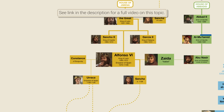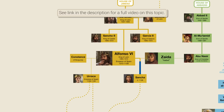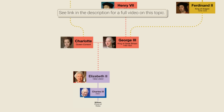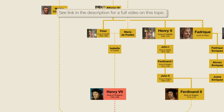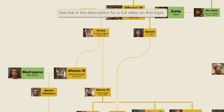Alfonso VI had a mistress named Zaida of Seville, who was either the daughter or the daughter-in-law of the Emir of Seville. She is often said to have been a descendant of the Prophet Muhammad. Alfonso VI had a daughter with Zaida who is an ancestor of King Charles III of England, which is why there's a theory that King Charles is a descendant of Prophet Muhammad. However, there are many questionable links in the chain of ancestors between Zaida and the Prophet Muhammad, and we're not even sure about her own father.